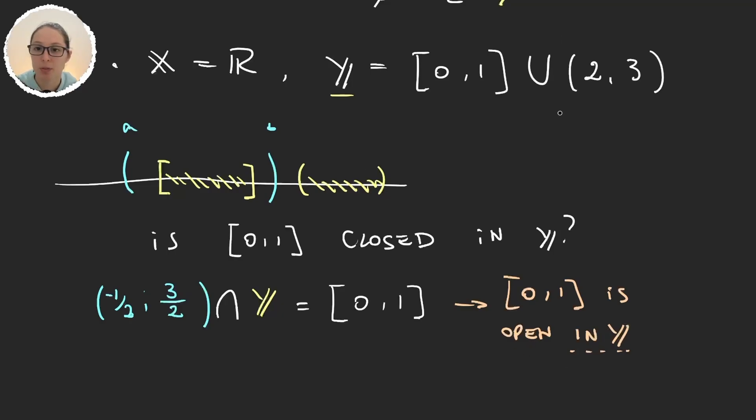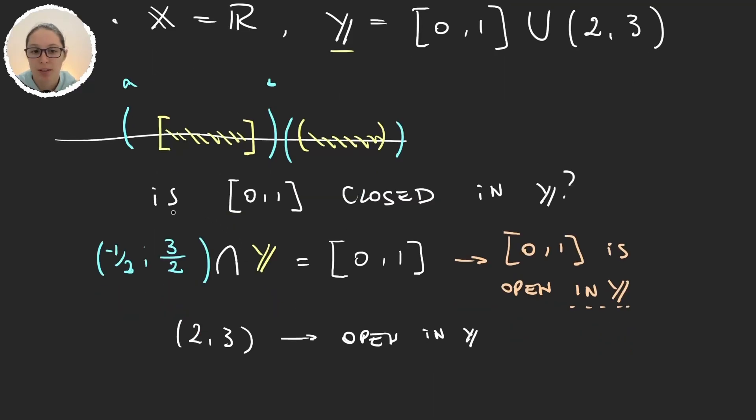And the same happens with the interval (2,3). We can write it as the intersection of some set intersection Y. (2,3) was actually open in the real line. Moreover, will it be open on Y? So likewise we have (2,3) open.